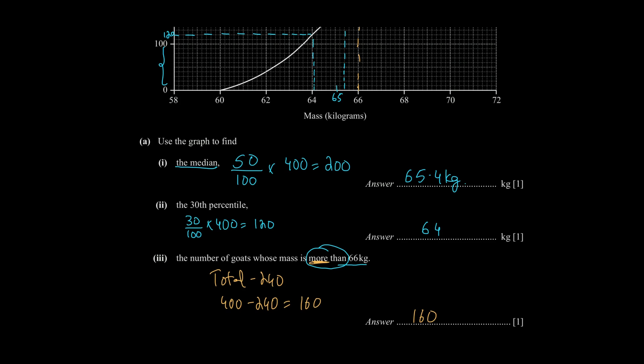In short, remember: whenever the question says 'more than' or 'at least' a certain value, we look at the corresponding cumulative frequency value for that value and subtract it from the total frequency. That's how you do it.